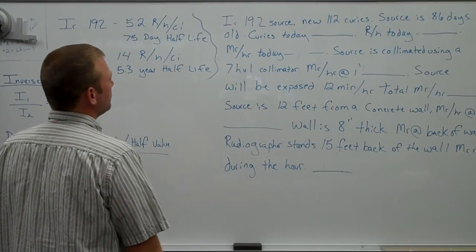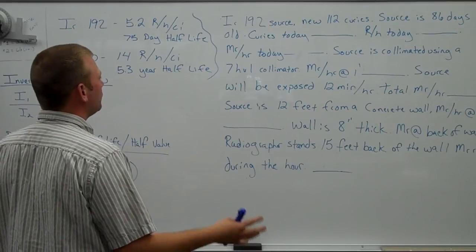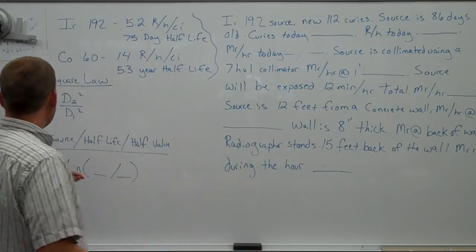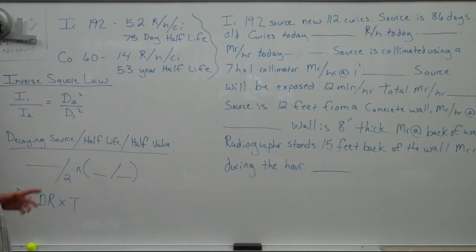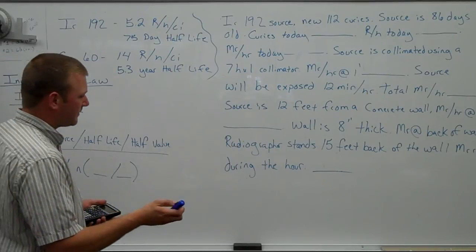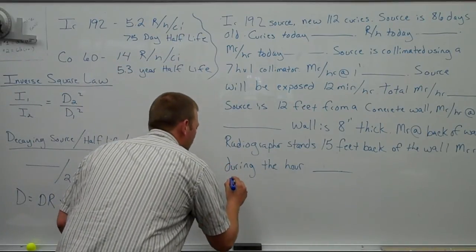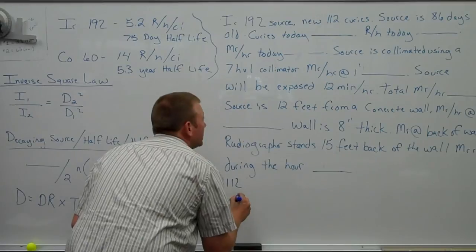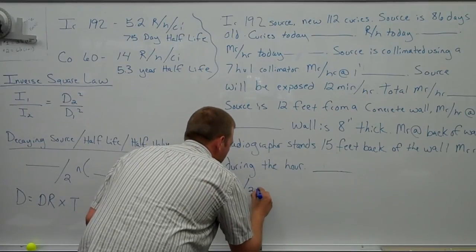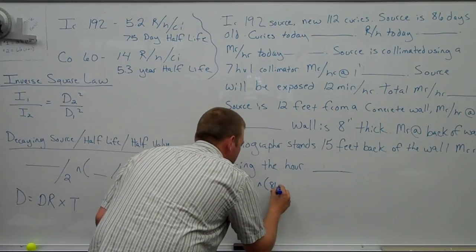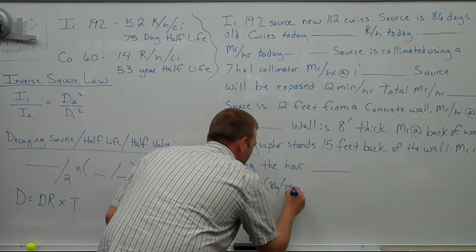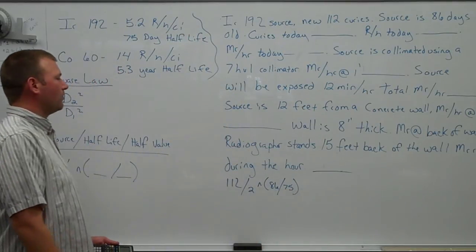Iridium 192 source, 112 curies new, is 86 days old. We want to know the curies today. Decaying source or half life here, we're just going to do this step by step. 112 curies, we want to divide that by 2 for half life. We know it's 86 days old, and 75 days is the half life for Iridium.